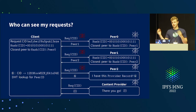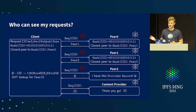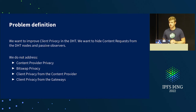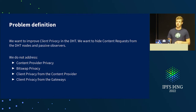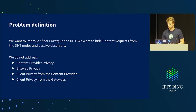For instance, if YouTube were built on top of IPFS, you wouldn't want the content encrypted because everyone should access it — but just by looking at the CID people are accessing, you can see which videos they're watching and spy on them. That's the problem. So we want client or reader privacy in the DHT, focusing specifically on the DHT and normal client, not BitSwap, content provider privacy, or the gateway.